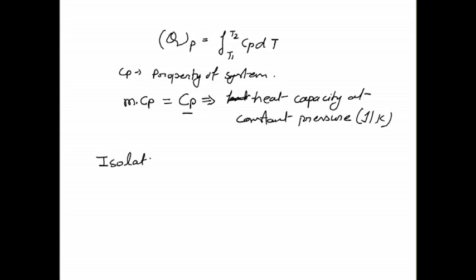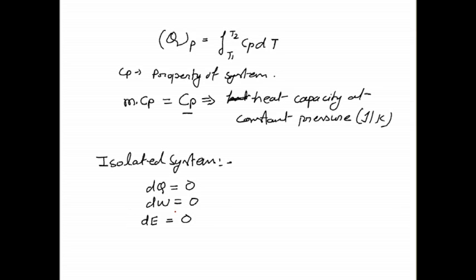Generally for an isolated system — isolated systems are those where neither mass nor energy is transferred between the system and surroundings — since there is no interaction between the system and surroundings, dQ = 0 and dW = 0. Denoting the change in energy as dE, the change in energy will be 0, so the energy of an isolated system is constant.